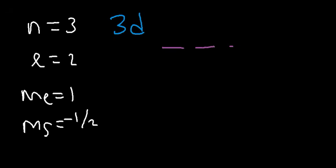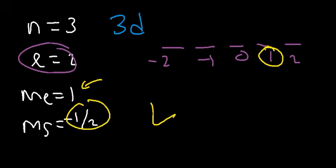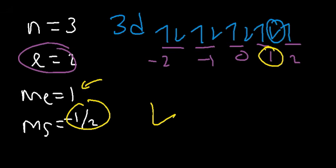D has five orbitals, and because L is two, it varies between negative two and two. We know the electron is in this orbital because ML is one, and we know the arrow has to be a down arrow. Counting through the orbitals starting with up arrows, the ninth position is our down arrow. So these four quantum numbers correspond to the 3D9 electron.